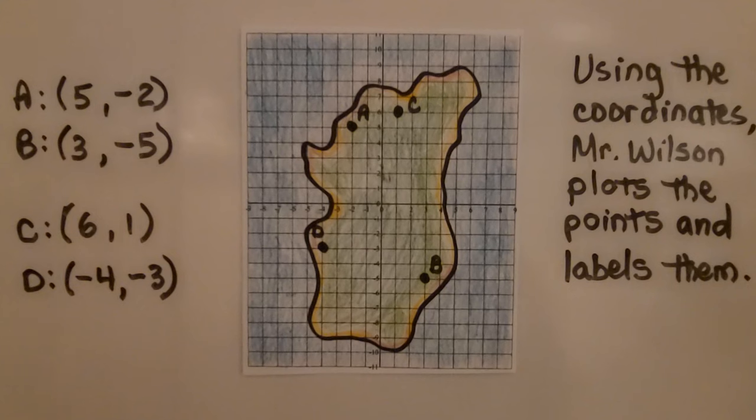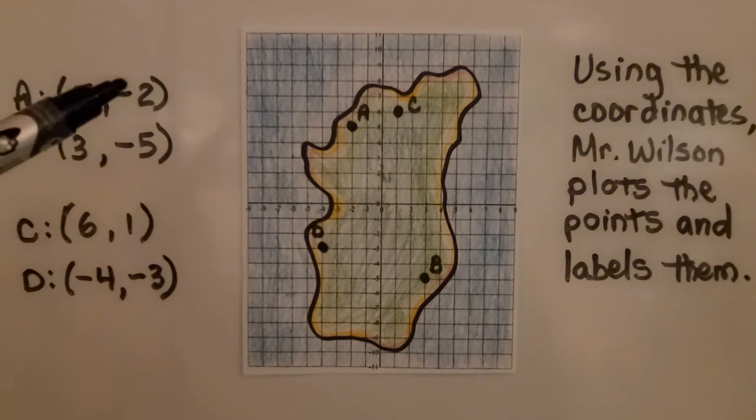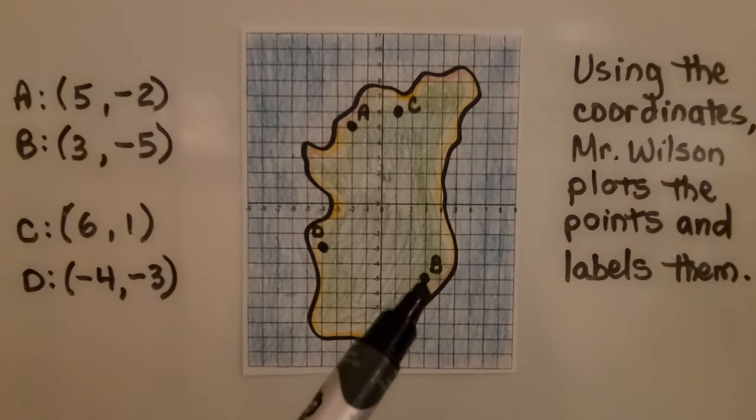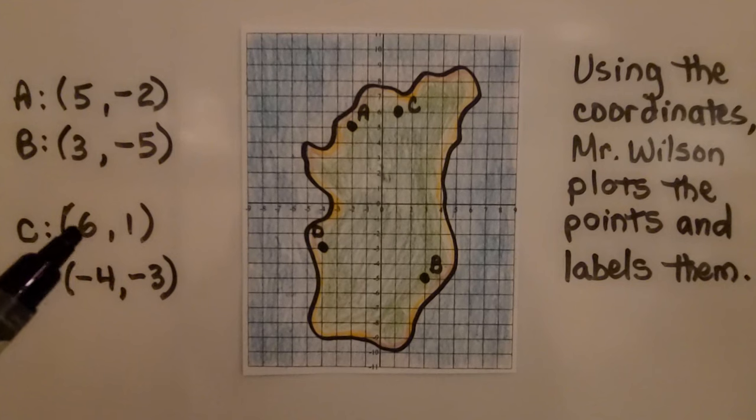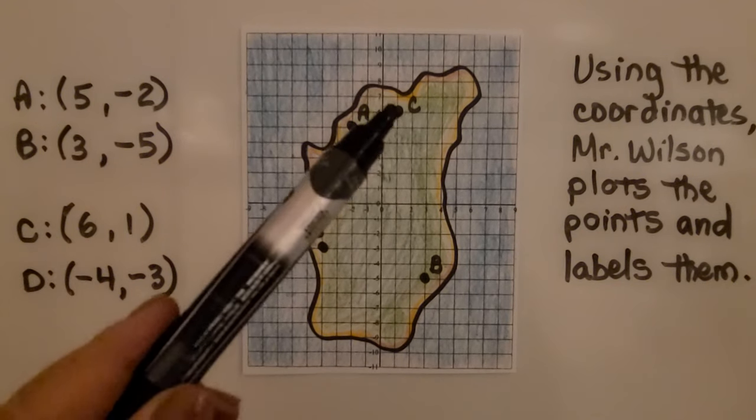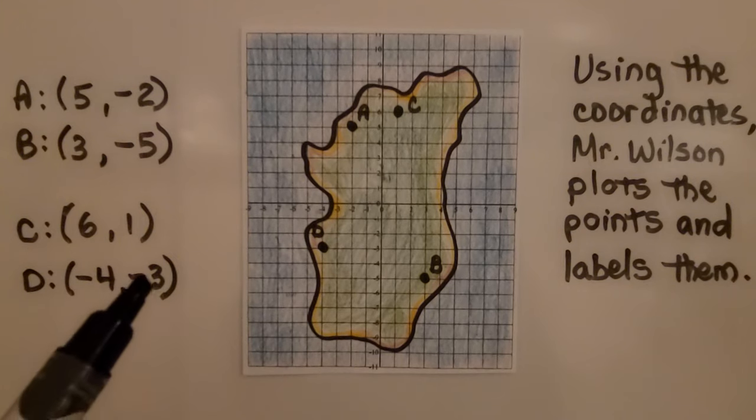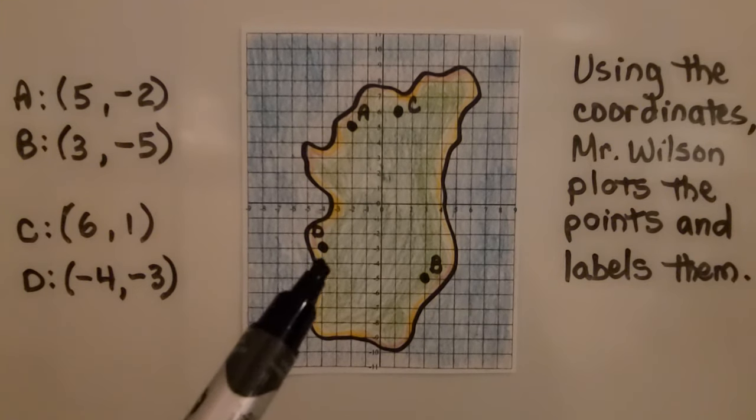Using the coordinates, Mr. Wilson plots the points and labels them. Point A is at 5 for x, negative 2 for y, so it's right here. Point B is at 3 for x, negative 5 for y, so it's down here. Point C is at 6 for x, 1 for y, so it's right there. And D is at negative 4, negative 3, so it's right there.